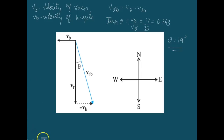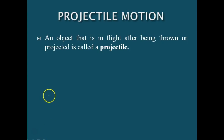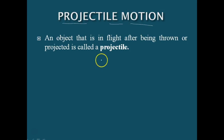Now let us study one of the important concepts, that is projectile motion. As an application of the ideas developed in the previous sections, we consider the motion of a projectile. An object that is in flight after being thrown or projected is called a projectile, and the path it forms is called projectile motion.